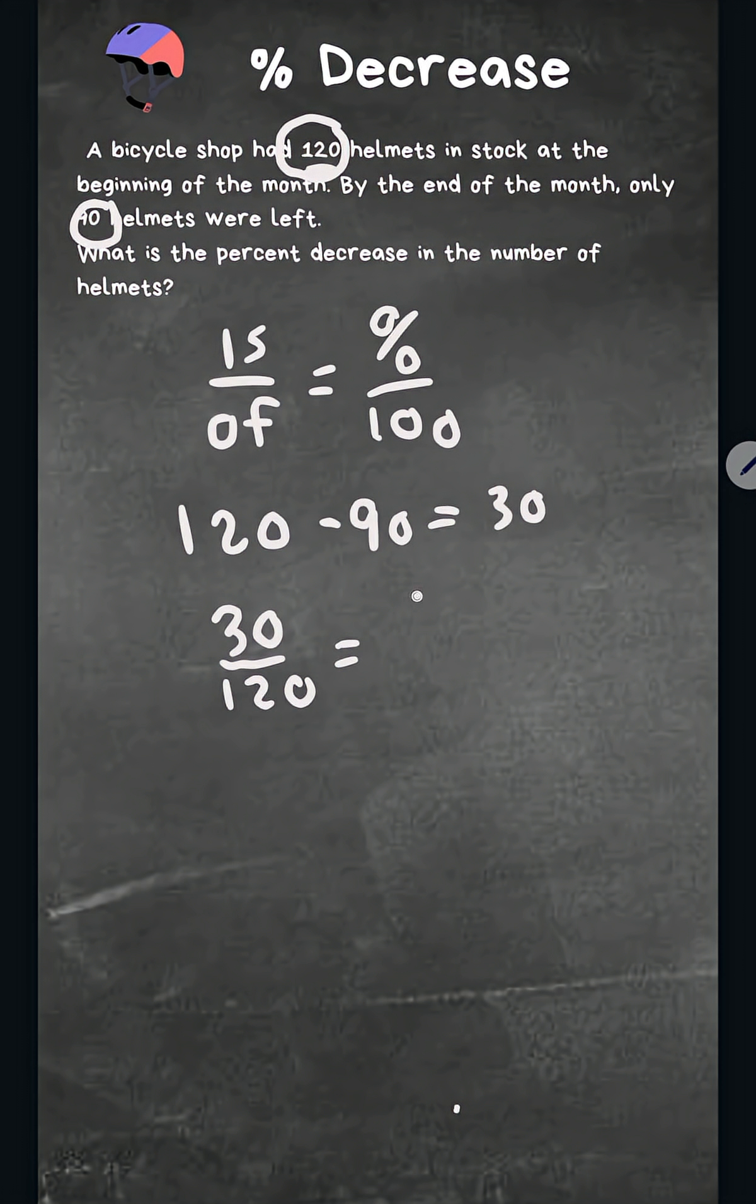And x is our percent because that's what we are trying to find, and we'll place it over 100. So now we just have a ratio that we can solve. We'll go 30 times 100, which is 3,000,